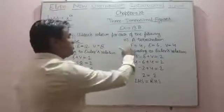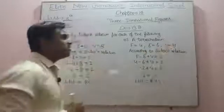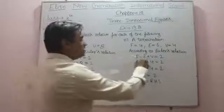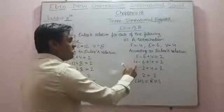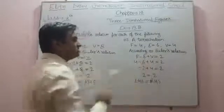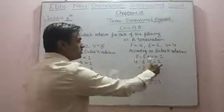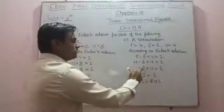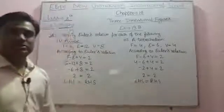In the second part we have a tetrahedron. In a tetrahedron, number of faces is 4, number of edges are 6, and number of vertices are 4. According to Euler's relation, F minus E plus V equals 2. So 4 minus 6 plus 4 equals 2: 4 minus 6 gives minus 2, and minus 2 plus 4 equals 2. So 2 equals 2, therefore LHS equals RHS, and Euler's relation is verified.